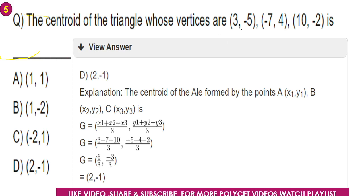Substituting the values: x-coordinate equals (3 minus 7 plus 10) by 3 equals 6 by 3 equals 2. Y-coordinate equals (minus 5 plus 4 minus 2) by 3 equals minus 3 by 3 equals minus 1. So the centroid is (2, minus 1).